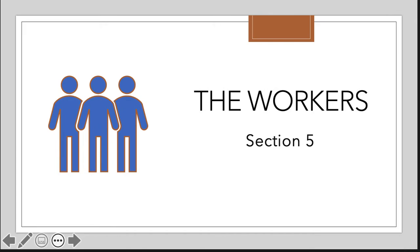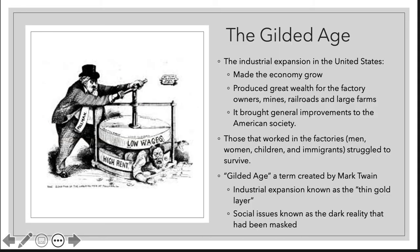We are now on section 5 of unit 6, looking at the workers — the people who were carrying the industrial revolution. This time period is called the Gilded Age. When I say gilded, think of plated or costume jewelry: it looks nice and shiny on the outside, it looks gold, but on the inside it's not real — it's hollow, it's fake. That is what the Gilded Age was meant to be. This is a term created by Mark Twain.